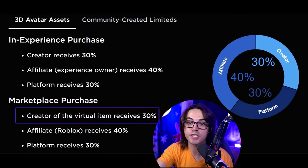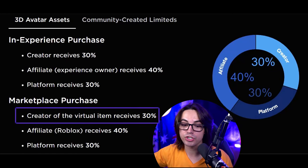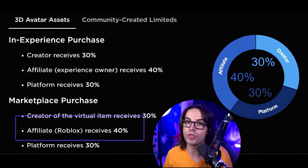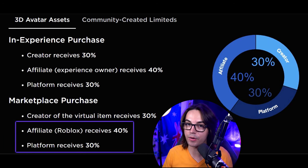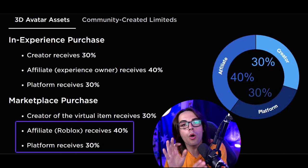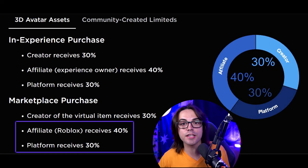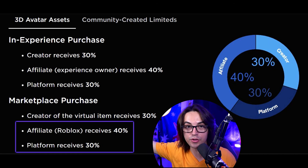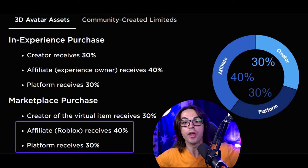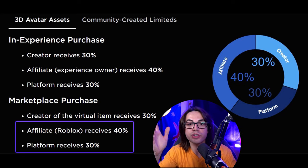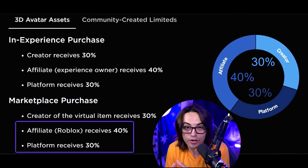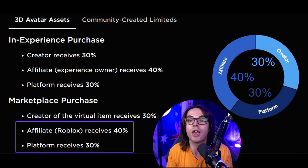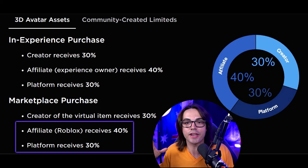This issue isn't only for in-game purchases — it's also for marketplace purchases. Again, the creator is only receiving 30% of that purchase. Now Roblox is the affiliate because they own the marketplace and show it to you on the front page of their website, but they're also still taking their 30% cut. So they're taking the 40% affiliate fee and the 30% cut, leaving the UGC creator — the person who put all the effort, work, and imagination into that product — still only getting 30%.